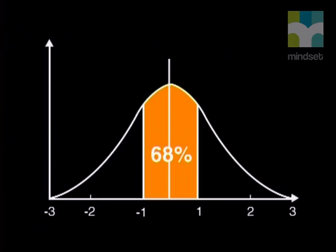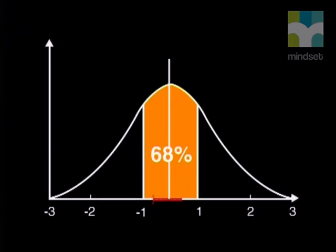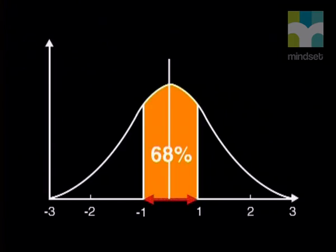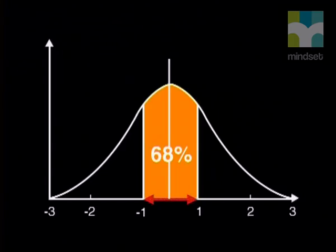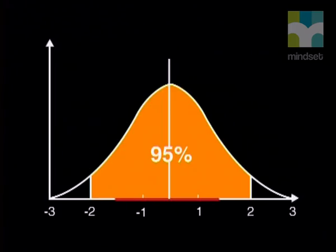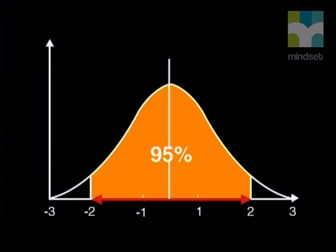Within one standard deviation left and right of the mean, we catch a specific amount of the data recorded, and within two left and right we get a larger specific amount. Specifically, if we move one standard deviation left and right of the mean, we cover 68% of the data. And if we move two standard deviations left and right, we catch 95% of the data.